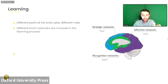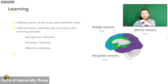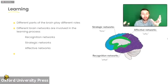When we receive information — reading, hearing, seeing things — that information is processed at the back of the brain, including the occipital and temporal lobes. This constitutes the recognition networks, or in other words, the "what": the content we need to assimilate. Once this information is processed in the recognition networks, it is relayed for meaning in the center of the brain, in the affective networks. This is where we associate the "why" of learning.